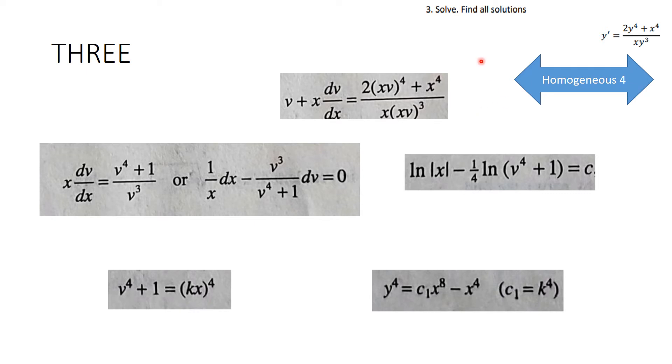We're going to say y over x is equal to nu, and so we make that substitution, and we end up with this, which is going to end up being separable. We separate variables here, and we integrate, then we exponentiate.